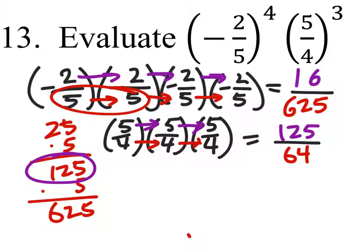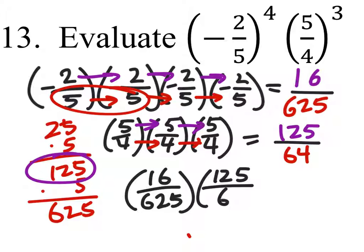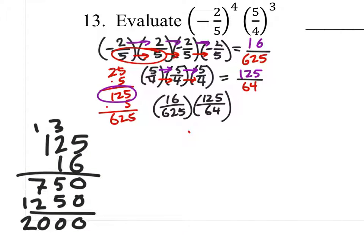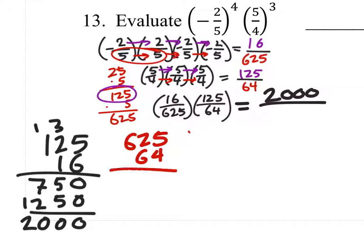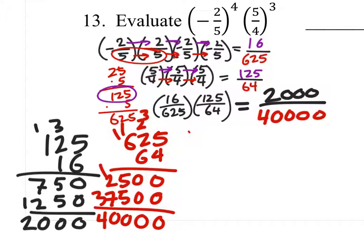So, really what we have is 16 over 625 times 125 over 64. So, we've got 16 times 125. So, there's the work for that. So, this equals 2,000 over... We've got to do 625 times 64. So, there's the work for the denominator.